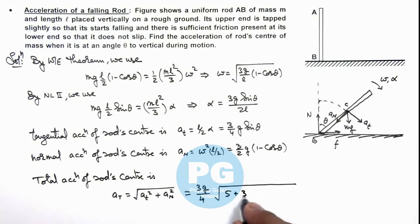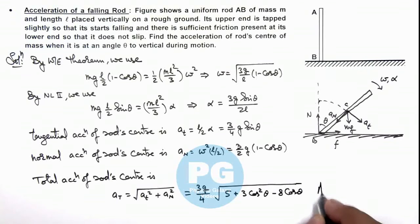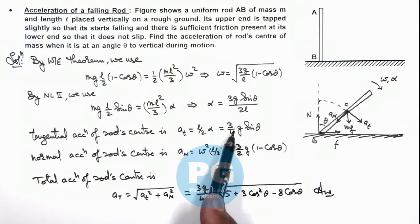5 + 3 cos² θ - 8 cos θ. This will be the result of this problem, and you can obtain this by substituting a_t and a_n and simplifying the relation.